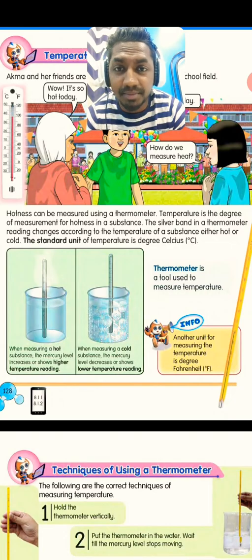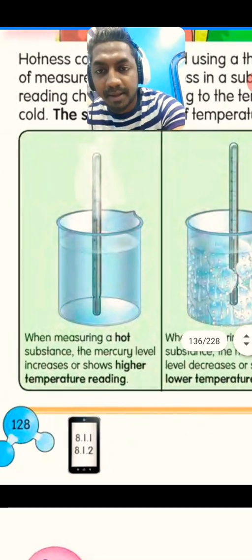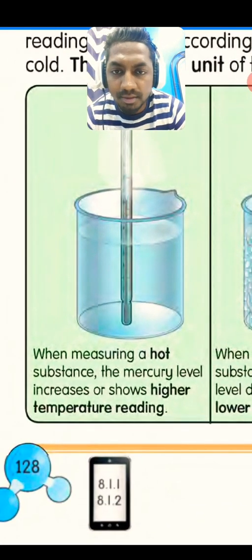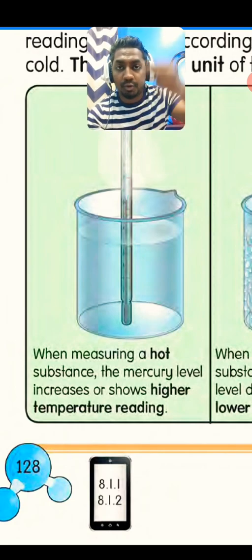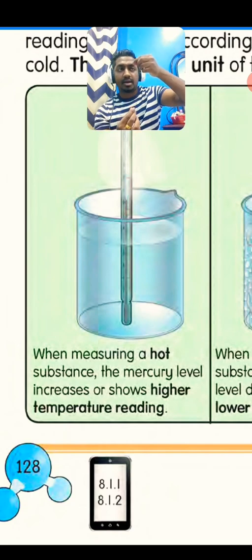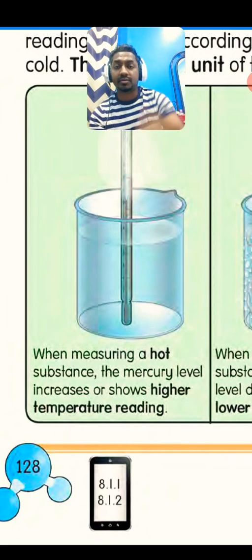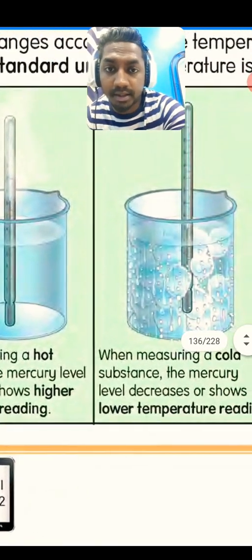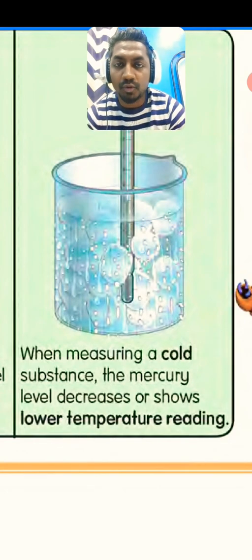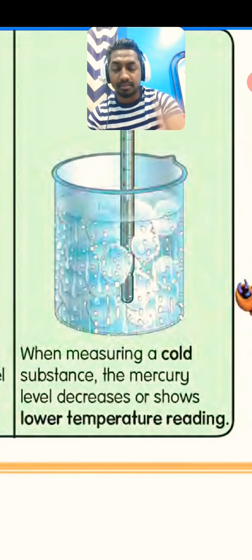When measuring a hot substance, the mercury level increases and shows a higher temperature reading. When you put the thermometer in a hot substance, the mercury expands and rises, showing a higher reading. When measuring a cold substance, the mercury level decreases and shows a lower temperature reading.